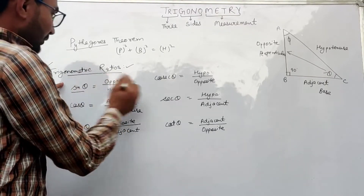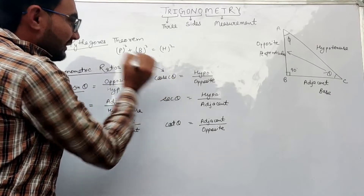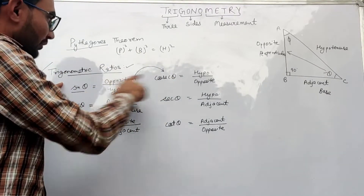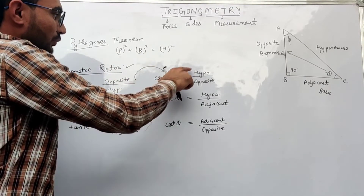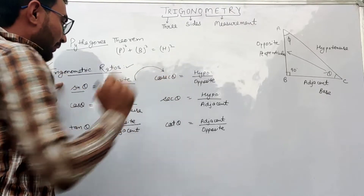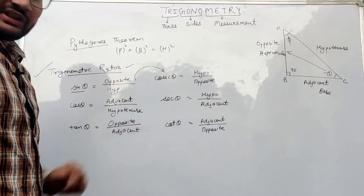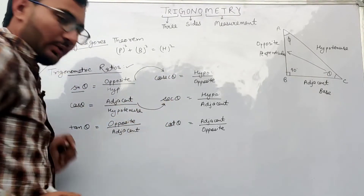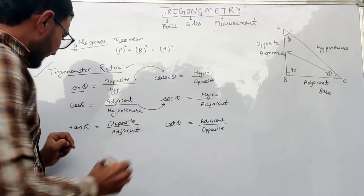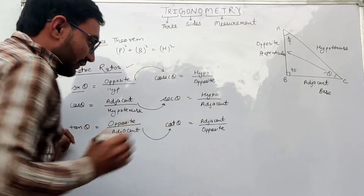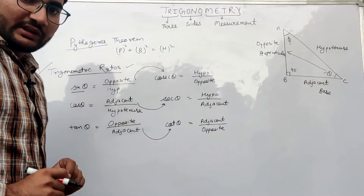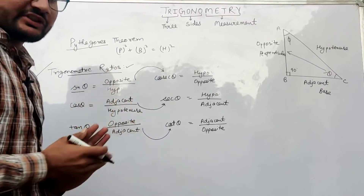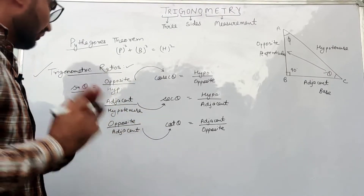Now you can see that sin theta is the opposite of cosecant theta, because cosecant theta equals hypotenuse upon the opposite side. Similarly, cos theta is the opposite of secant theta, and tan theta is the opposite of cotangent theta. So this is the relationship between these six trigonometric ratios.